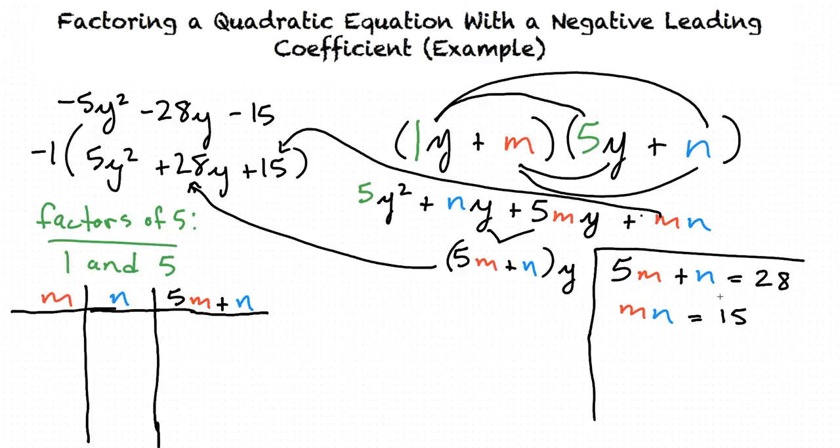So we can start out by thinking of, say, m = 1 and n = 15, two factors of 15. If we plug these into this expression here, we have 5 times 1 for m plus 15 for n. That equals 5 + 15, which equals 20. So that does not work.